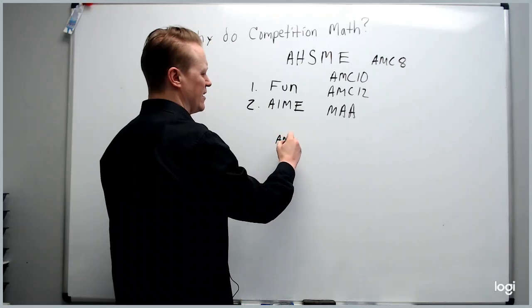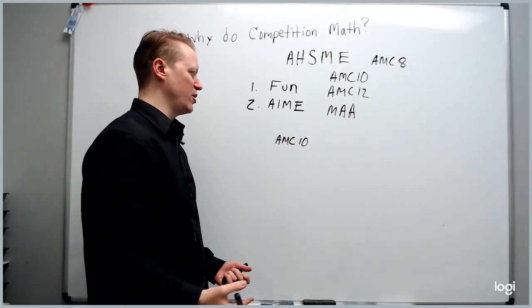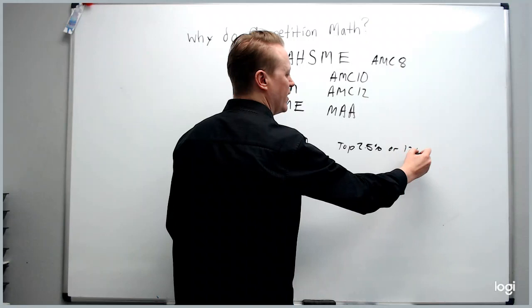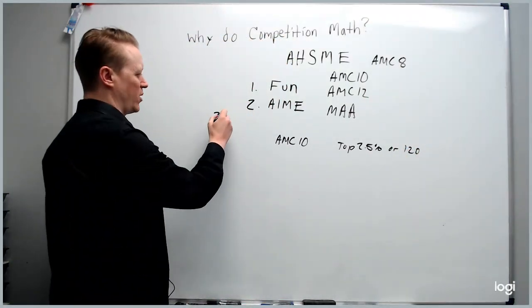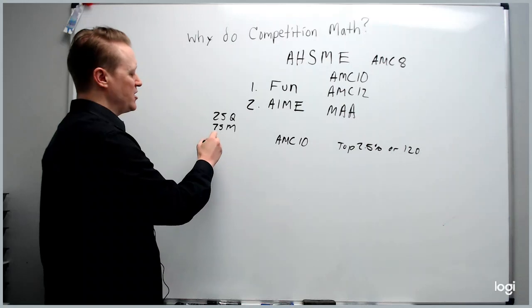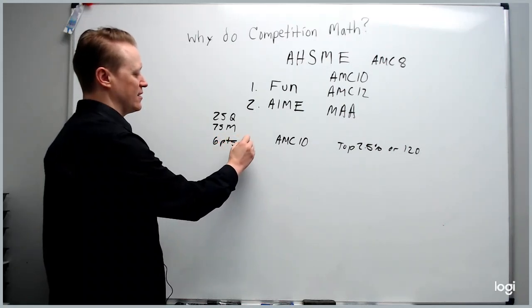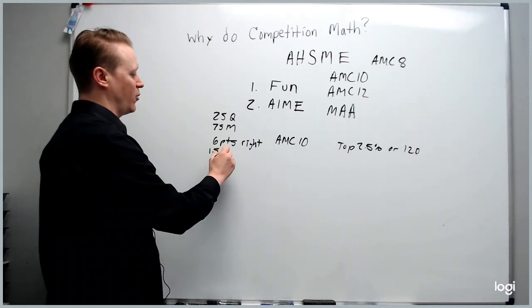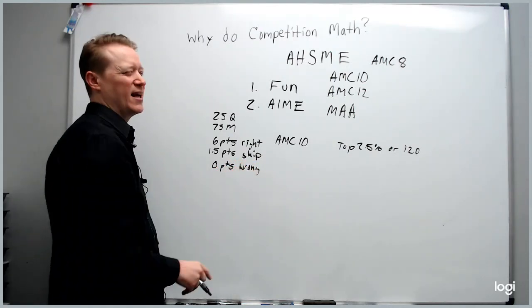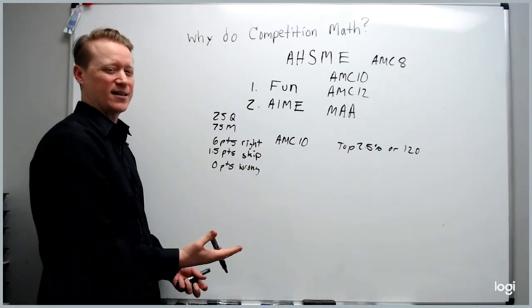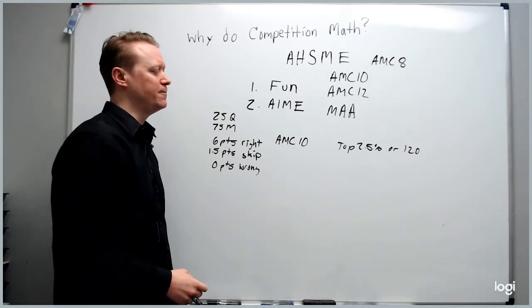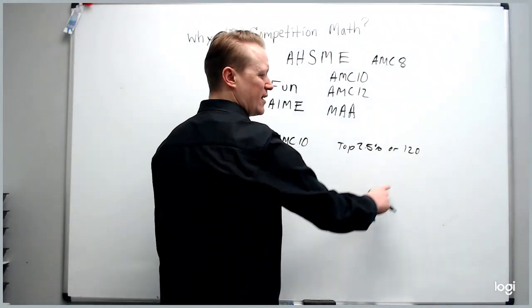So on the AMC 10, it used to be that you could score the top 2.5% or a 120 or above. So how does scoring work? On the test, there's 25 questions. You have 75 minutes. An average of 3 minutes per question is given. Each right answer you get is 6 points. Each skip that you have is 1.5 points. And you get 0 points if you're wrong. Why do they do this? They want to discourage guessing. They don't want you to get points for guessing. It works out. But you get more points if you skip it. So if you don't know, in general, you should probably skip it.